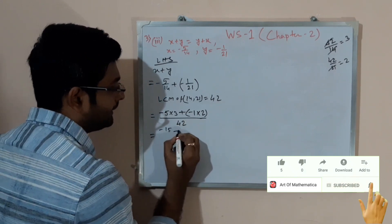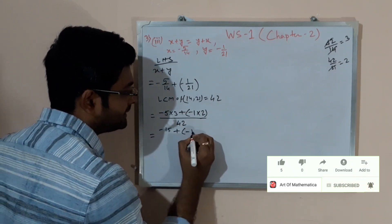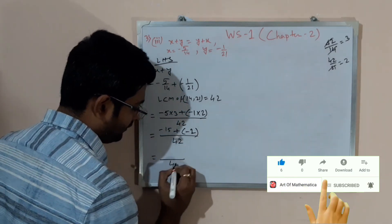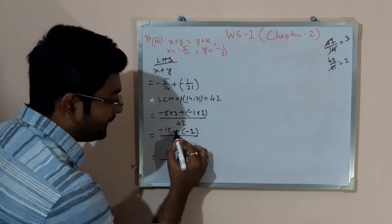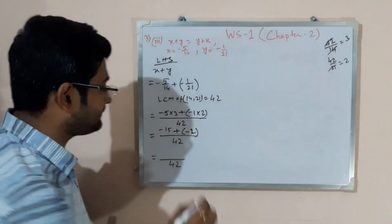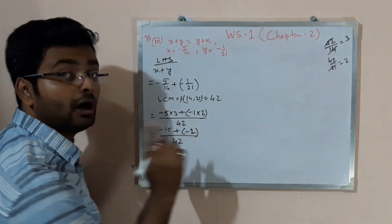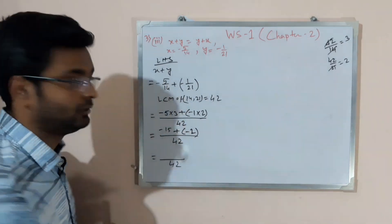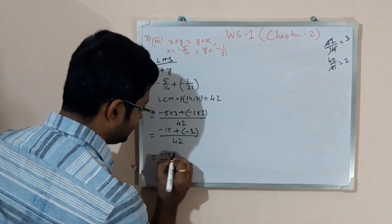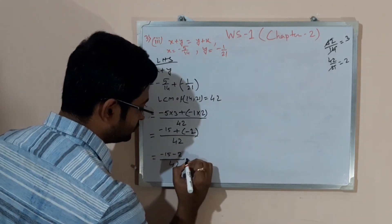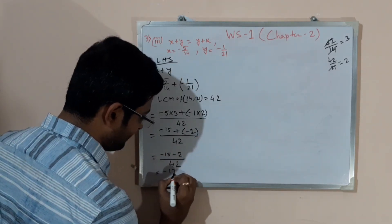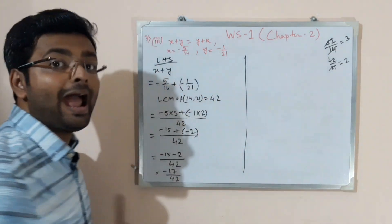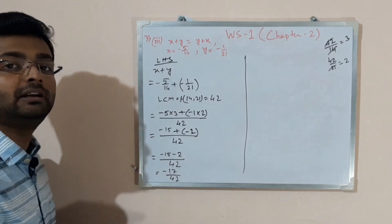That gives minus 15 plus bracket minus 2 over 42. Be careful about the plus/minus sign — I keep repeating this because it is very important. So plus minus gives minus: minus 15 minus 2 equals minus 17 by 42. Now we need to verify the Right Hand Side and check whether it also gives minus 17 by 42.